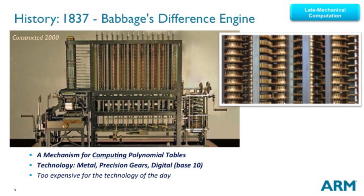Babbage's Difference Engine is an interesting one too — a machine of metal, precision gears, digital-based. It was conceived without recognition of the limitations of the technology available at the time. They actually made it in 2000, and it was a mechanism for computing polynomials, but they hadn't been able to make it before then. So although he created this thing — although it would have worked — he couldn't actually produce it.